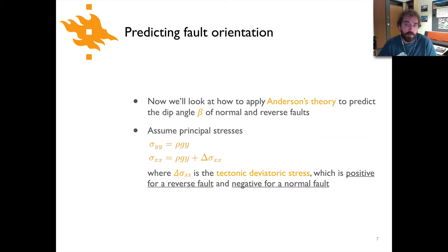So now let's look at how we can apply this Anderson's theory to predict dip angles of normal and reverse faults. In this case we'll call the dip angle the Greek letter beta. We'll make a couple simple assumptions here. We're going to assume that sigma yy the vertical normal stress is simply rho gy just like we've done previously. It's the lithostatic stress and sigma xx is going to be rho gy plus delta sigma xx where delta sigma xx is some tectonic deviatoric stress. So it would be positive when we're squeezing the rock in the case of a reverse fault and negative in the case where we're pulling the rock apart for a normal fault.